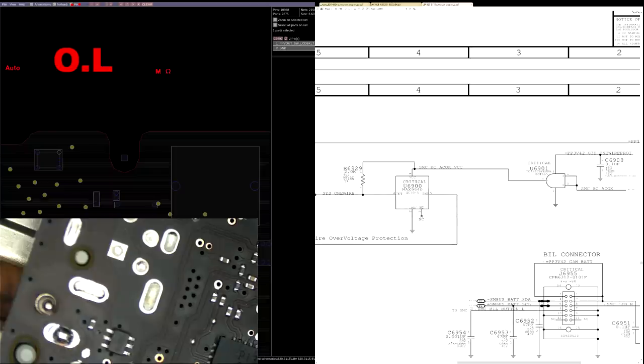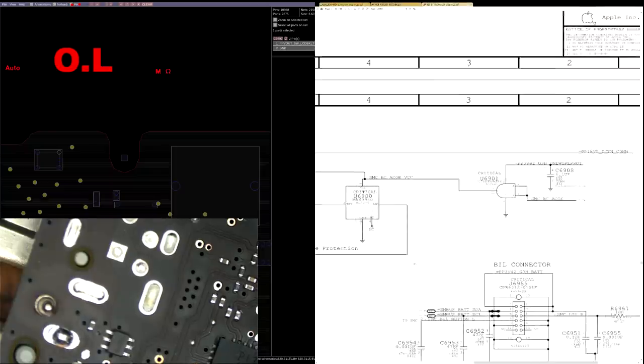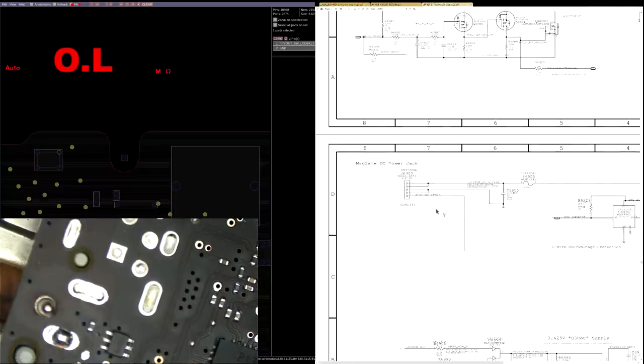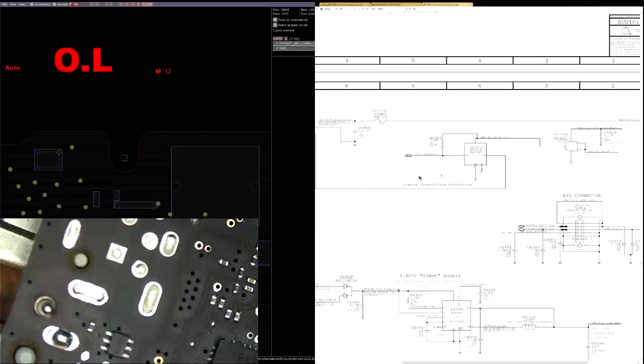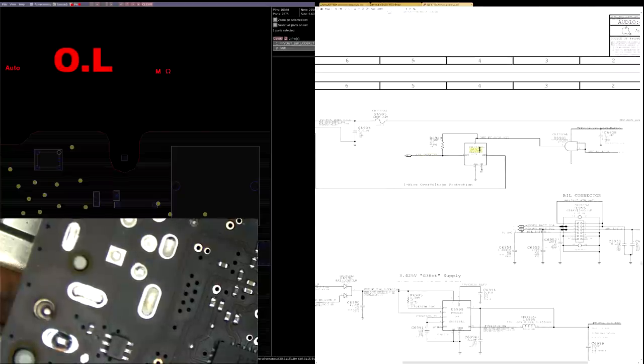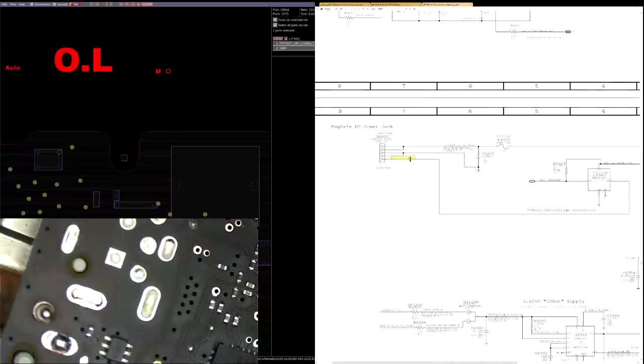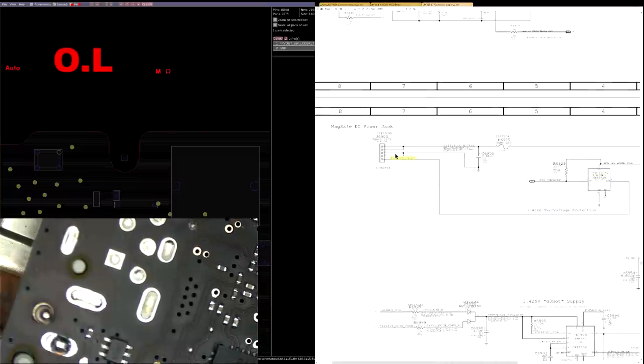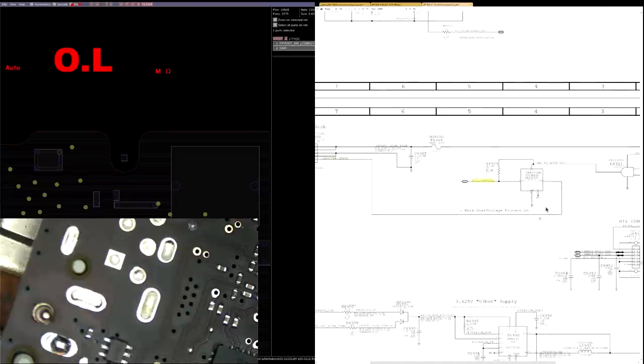As you all know by now, in order for this to work, the charger adapter sense line needs to talk to the SMC on the SIS-1 wire line, but it has to go through U6900 first. Just in case adapter sense is 16 volts because our charger is broken, we don't want to send 16 volts to the SMC. U6900 is the white knight of the SMC.